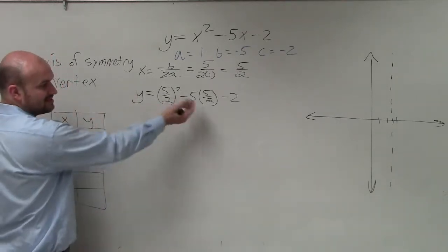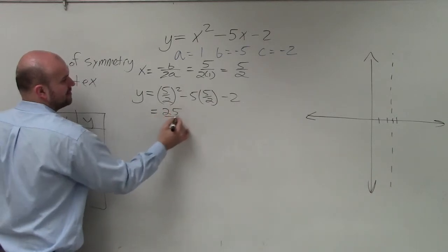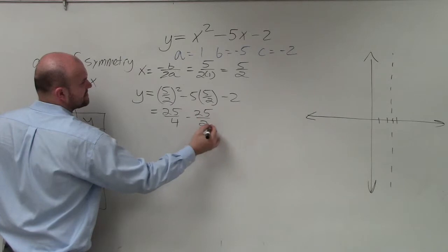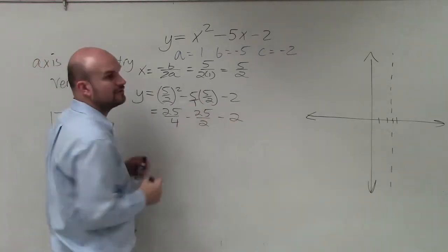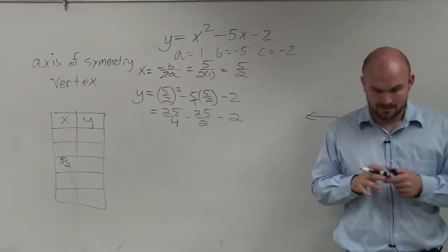So now, we can simply simplify. 5 halves squared is going to equal 25 fourths minus 25 halves minus 2, right? Because remember, the 5 is just 5 over 1. So when you multiply a whole number times a fraction, you just multiply straight across.